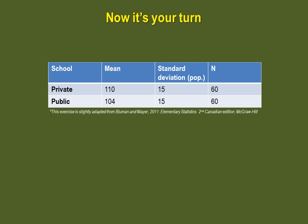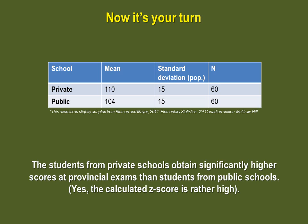Now it's your turn. Pause the video and test the claim that students from private schools obtain significantly higher scores at provincial exams than students from public schools. Your calculated z is quite high, so you can state that students from private schools obtain significantly higher scores at provincial exams, meaning there are two distinct populations of students based on provincial exam results.